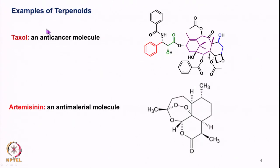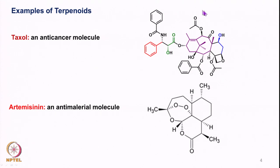Then we have an example of a terpenoid. This is a very interesting molecule called Taxol. It is a very important anticancer molecule isolated from a tree called the yew tree. As you can see, there are three rings here, and a fourth one is an oxygen-containing ring, plus a side chain. This particular molecule has a number of asymmetric centers, and the side chain itself has two asymmetric centers, making the synthesis of this entire molecule quite complicated.